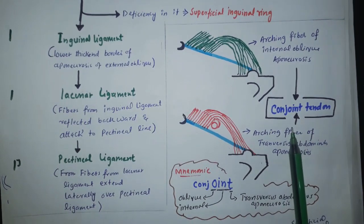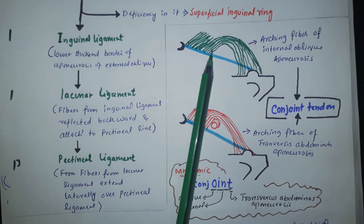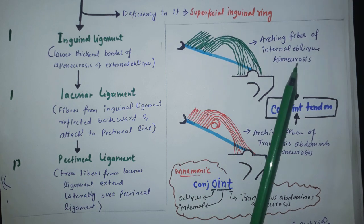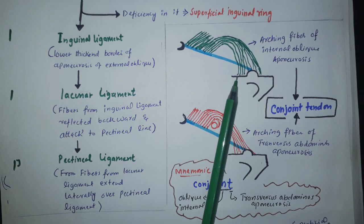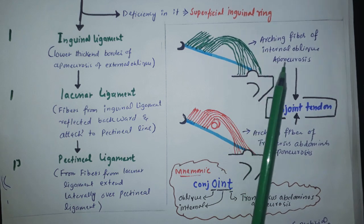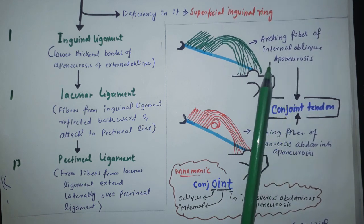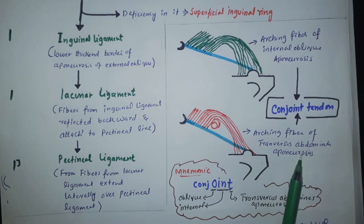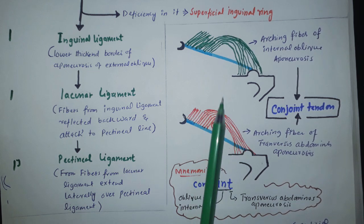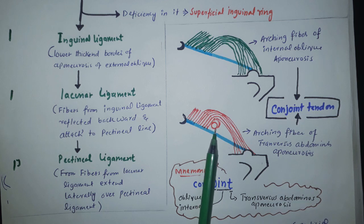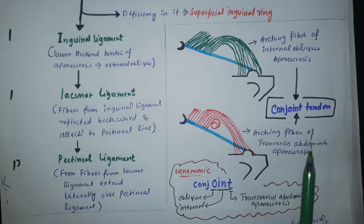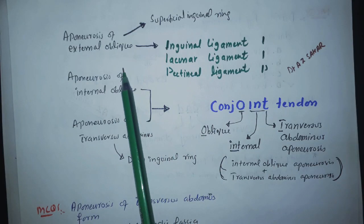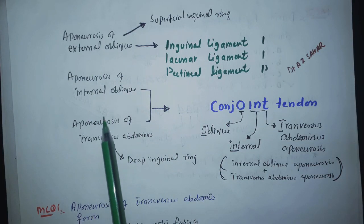Now, conjoined to the inguinal ligament, there is the attachment of the internal oblique muscle. The arching fibers of the internal oblique and transversus abdominis aponeuroses attach with the pectineal line and pubic crest, forming the conjoint tendon. The deficiency in the transversus abdominis aponeurosis is actually called the deep inguinal ring. So the conjoint tendon is made from the arching fibers of the internal oblique aponeurosis and the transversus abdominis aponeurosis.